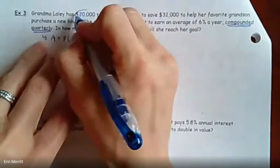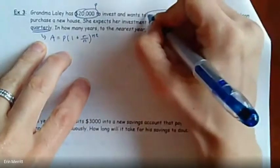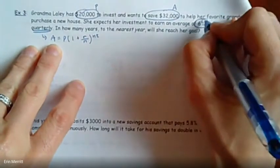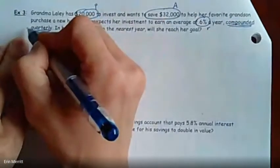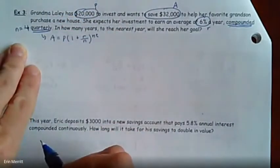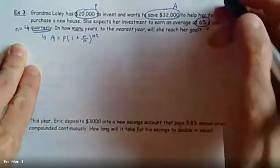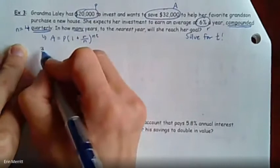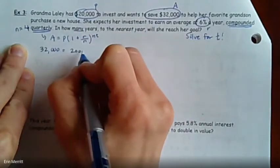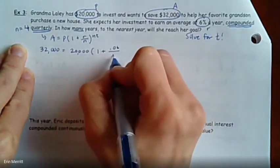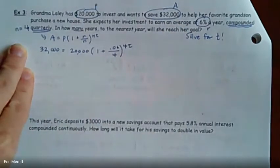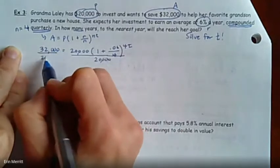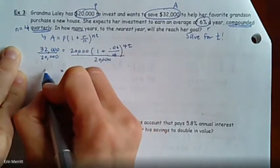Let's think about what we got. Starting with 20,000, that's your P value. Wants to save 32,000, that's the A value, the amount she wants for her grandson. 6% per year, that's your R value. Compounded quarterly means n equals 4, four times a year is how often they're compounding. In how many years will it take? We are trying to solve for t. Let's plug everything in. 32,000 equals 20,000 times 1 plus 0.06 over 4 raised to the 4 times t.